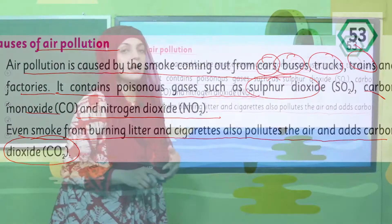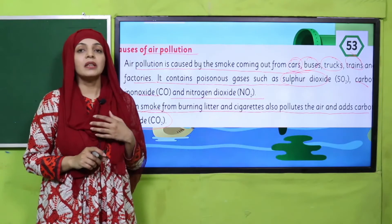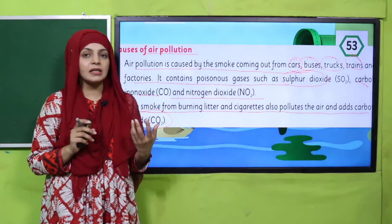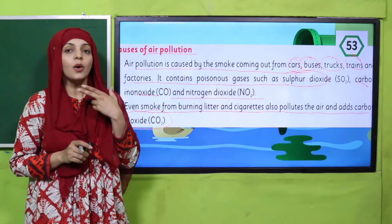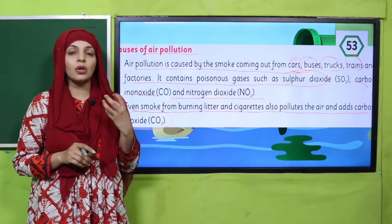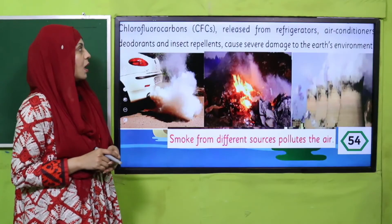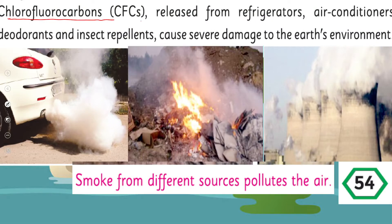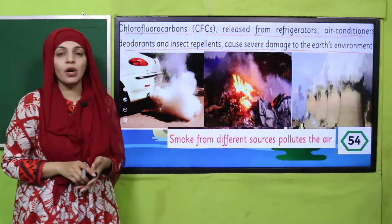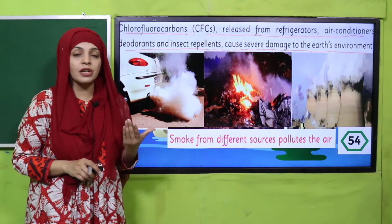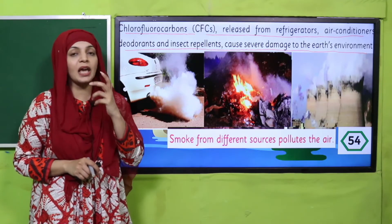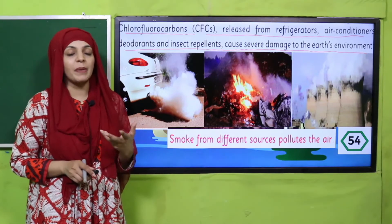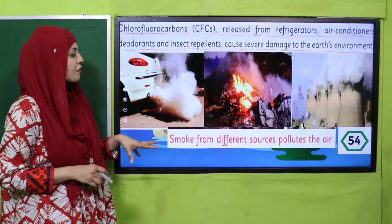Whenever fuel burns — including the gas in our homes — very dangerous gases are released into the air, such as sulfur dioxide, carbon monoxide, and nitrogen dioxide. Even cigarette smoke adds carbon dioxide to the air, which is very dangerous. Additionally, chlorofluorocarbons (CFCs) released from refrigerators, air conditioners, deodorants, and insect repellents cause severe damage to the earth's environment. These CFCs have a very bad effect on our environment.